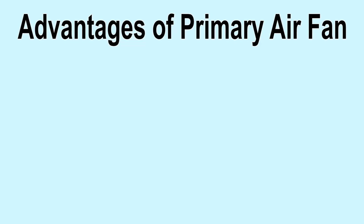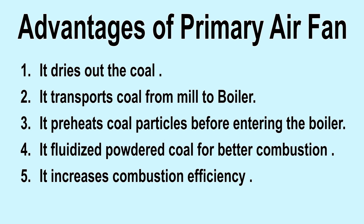We can summarize the advantages of the primary air fan as follows: it dries out the coal; it transports coal from the coal mill to the boiler; it preheats coal particles before entering the boiler; it fluidizes powdered coal for better combustion; and it increases combustion efficiency.